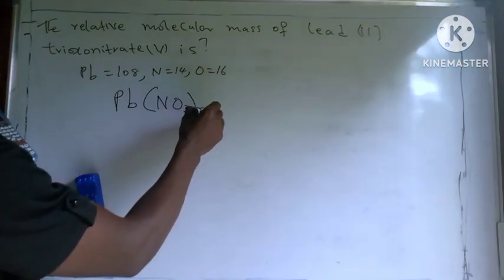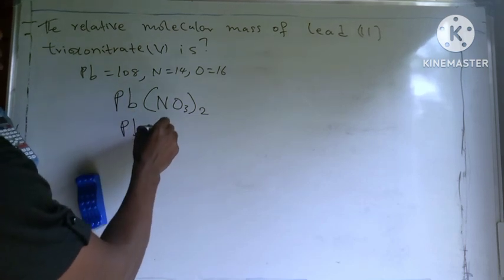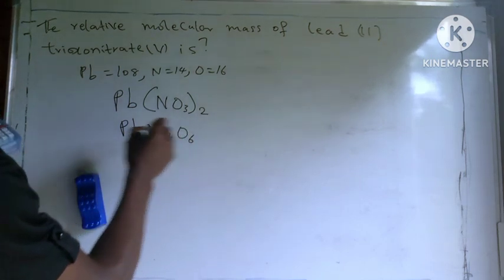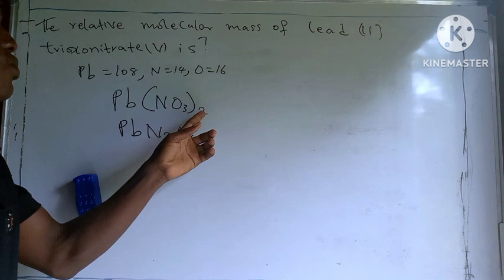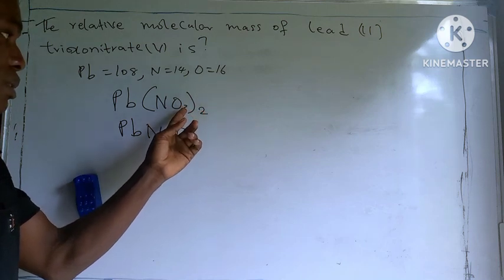NO₃ bracket close subscript 2 here, okay. So it's the same thing as PbN₂O₆, okay. So this two here will multiply both this one and this one.